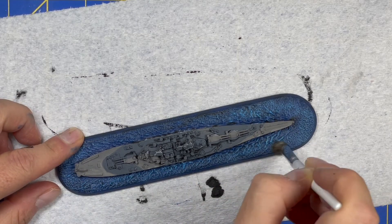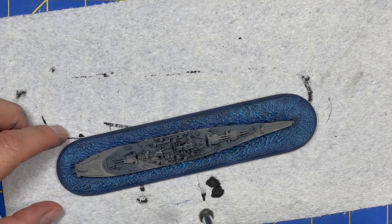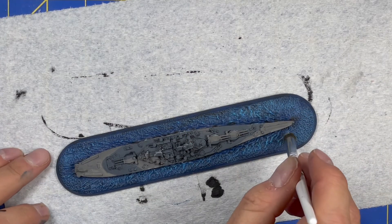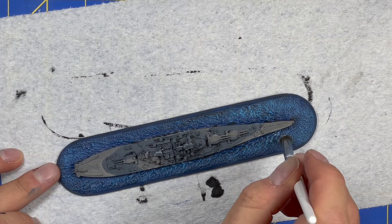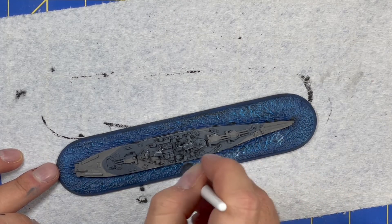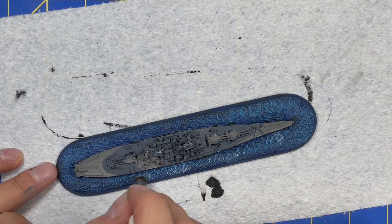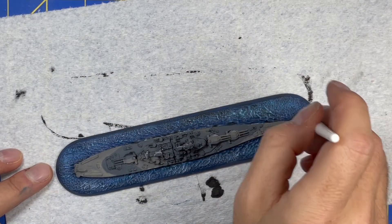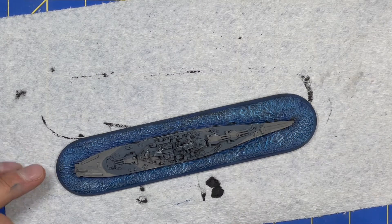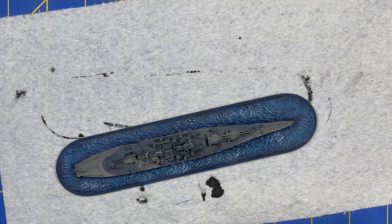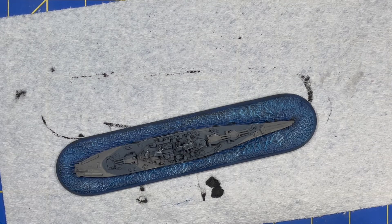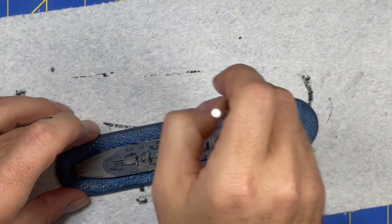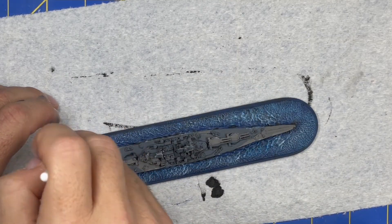As you can see here, I'm putting the first stages of the water. I'm just using a standard blue as the base coat, so that's going to get us started. And then of course I dry brush a light blue and then a white on top of that to finish it out. I have to say that this was a fun ship to build and paint, always a pleasure to work with my first true love in gaming, which is World War II naval.